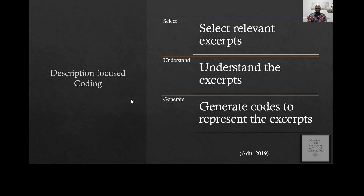For description-focused coding, you are just describing what participants are giving you — like a journalist who reports what they see. You look at the transcript, select significant information, make sure you understand it, and then based on that understanding, you generate a code to represent the information you've selected. That's all description coding involves.